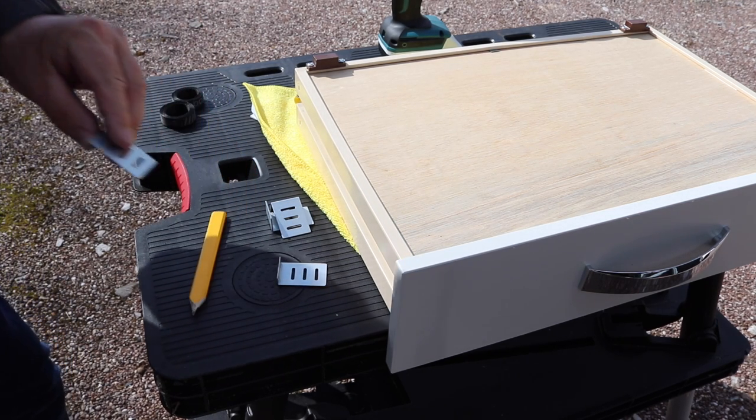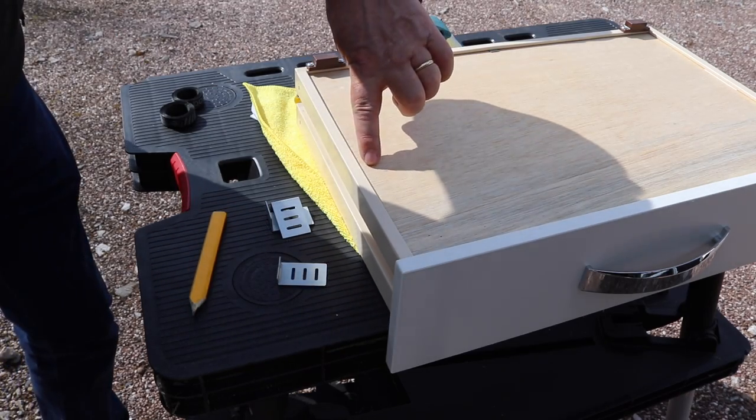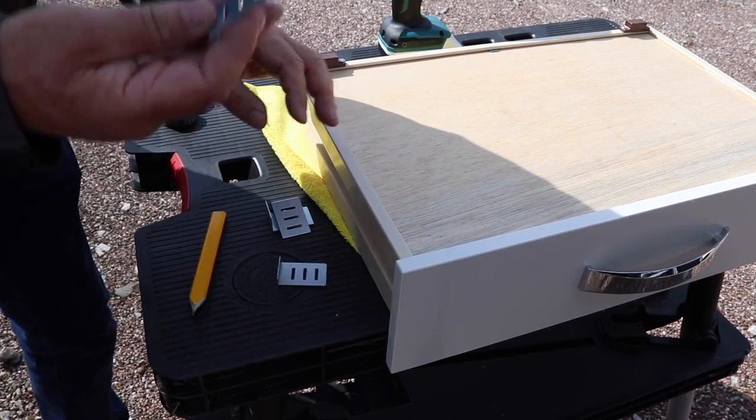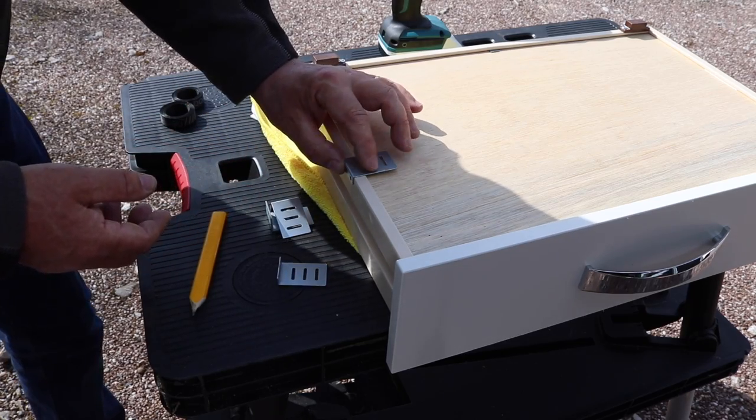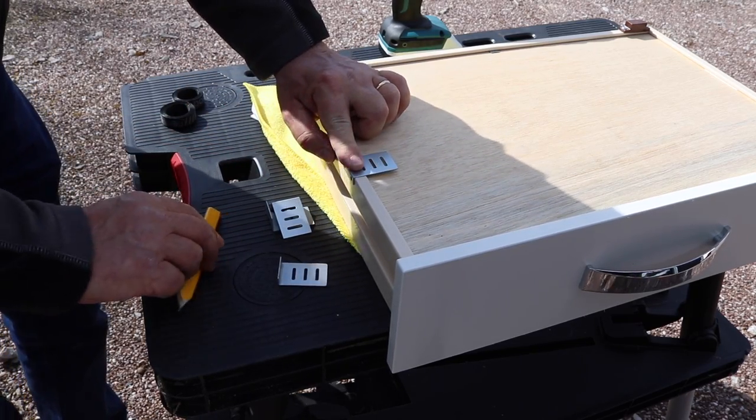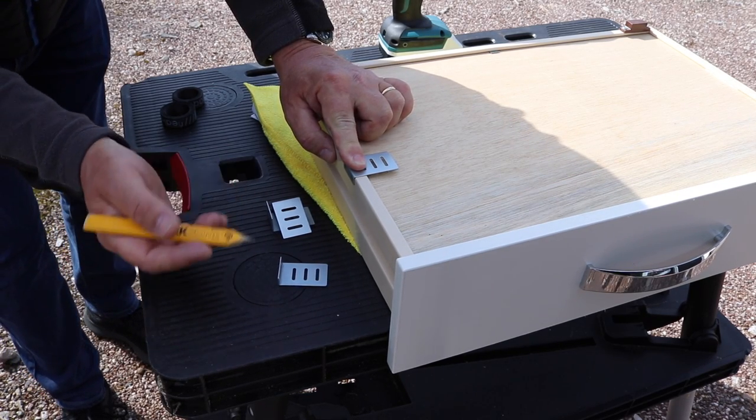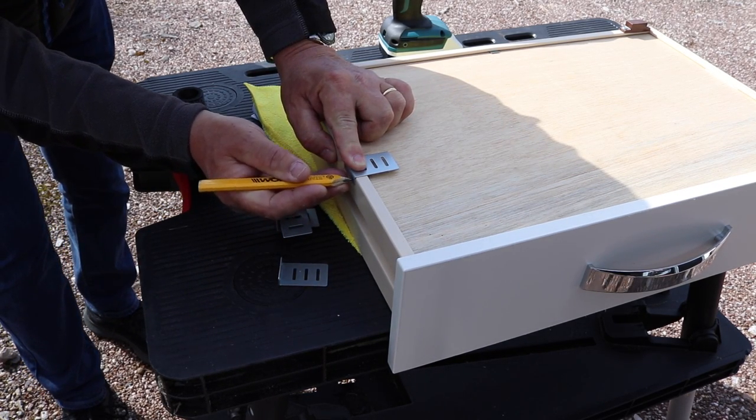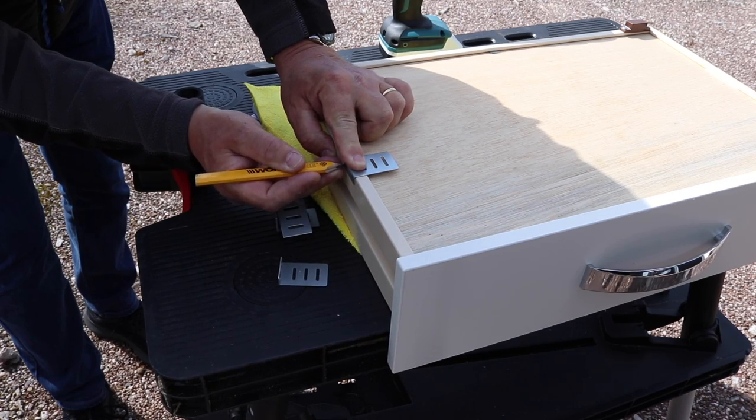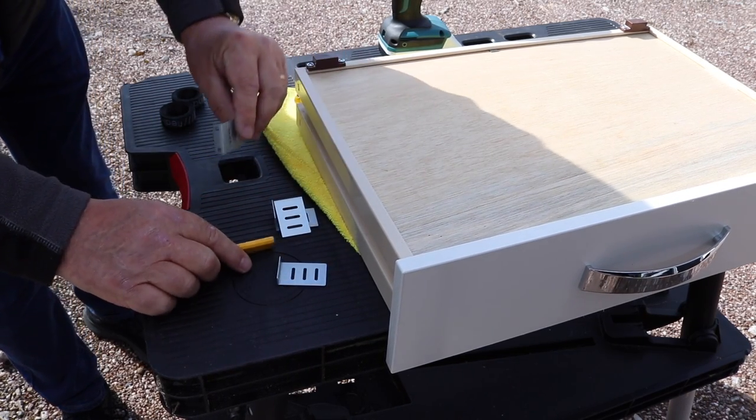So what we're going to do here, we know that this is our sagging area, so we're going to take the bracket and we're going to fit it to the edge so that the pre-drilled holes in the bracket are on the edge of the actual runner. So we're just going to mark them now with a pencil.